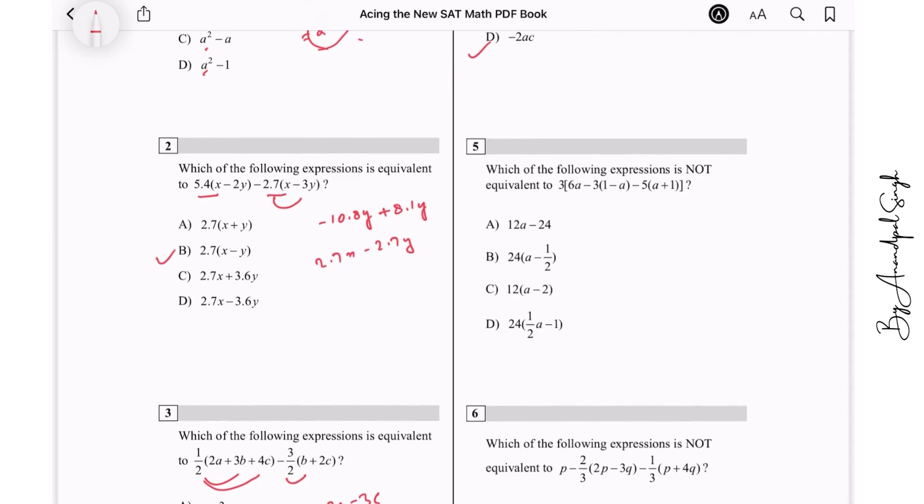Which of the following expression is NOT equivalent to this? It is written not equivalent to this, so let us simplify it. It will give you 6 times 3 is 18. Or you can just simplify it a little bit further also. Say you can simplify these two first of all: 3(6a - 3 + 3a) and then minus 5a - 5a - 5.